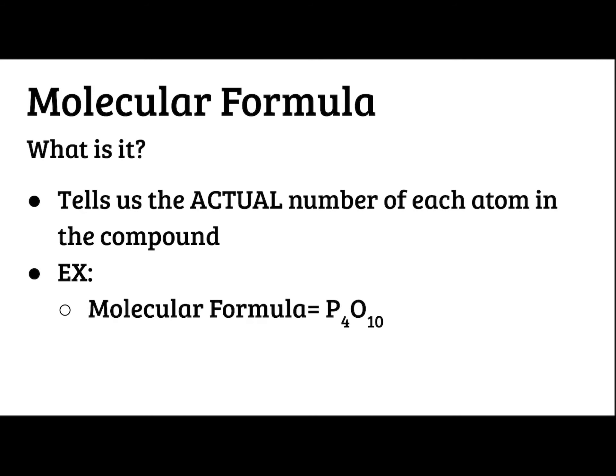A molecular formula tells us the actual number of each atom in the compound. So this is what you're already used to seeing every time we see a formula. It's called a molecular formula. So an example of that would be P4O10. That's telling me I have 4 phosphorus and 10 oxygen.